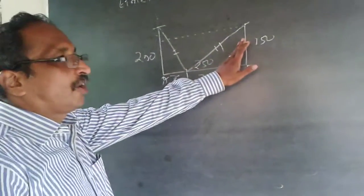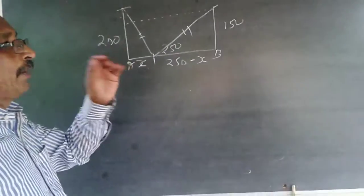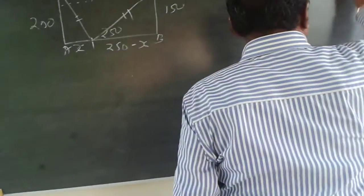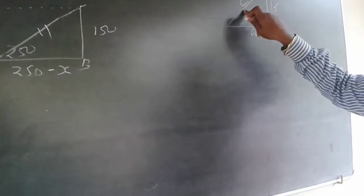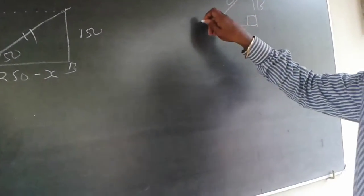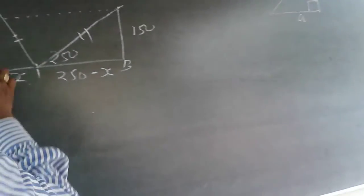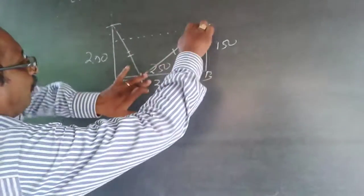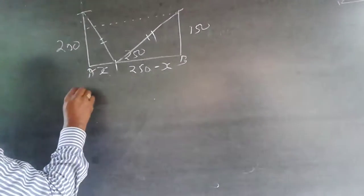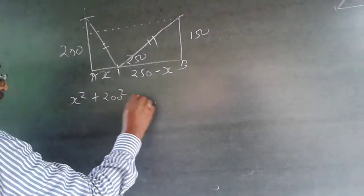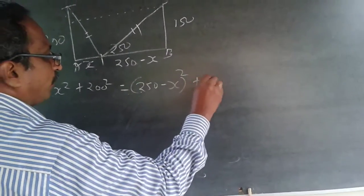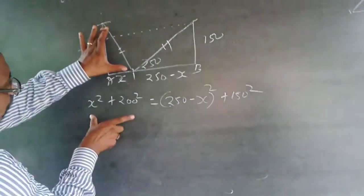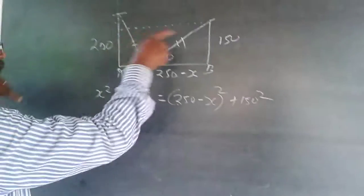Now we have two right angle triangles. In a right angle triangle, a² + b² = c². Applying this: x² + 200² equals the hypotenuse squared from Tower B's side, which is (250 − x)² + 150². This is valid because the two hypotenuses are equal — starting time is the same, speed is the same, ending time is the same, so distance is equal.